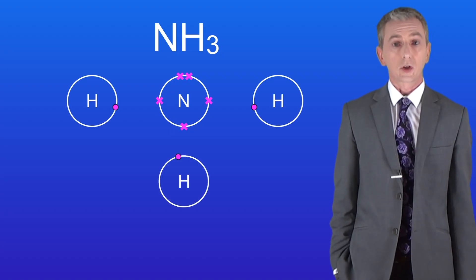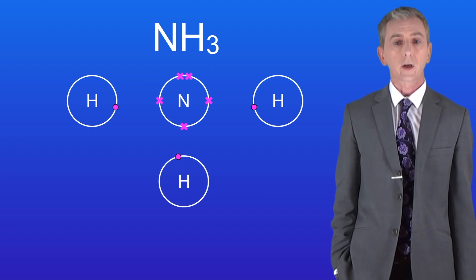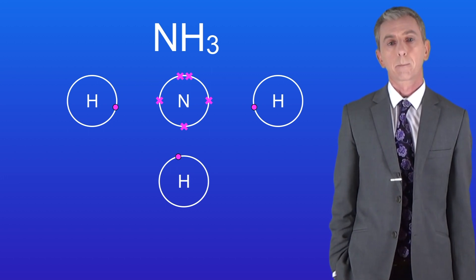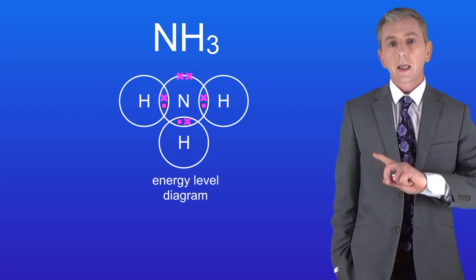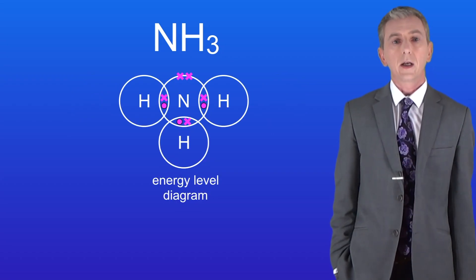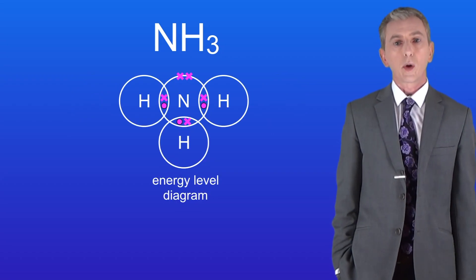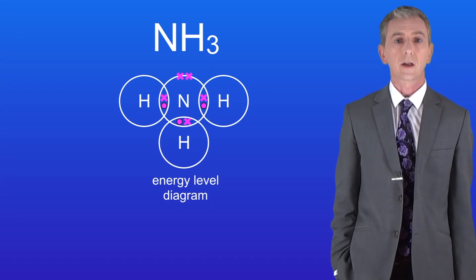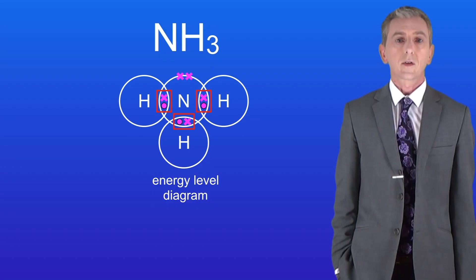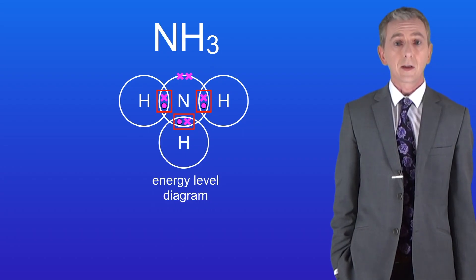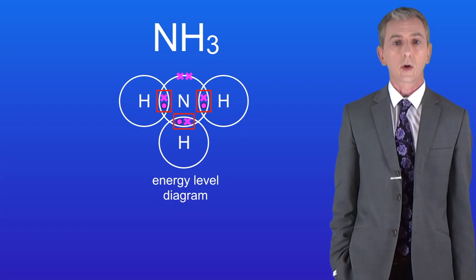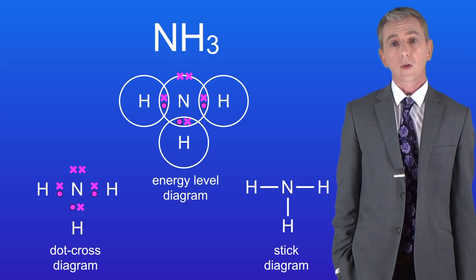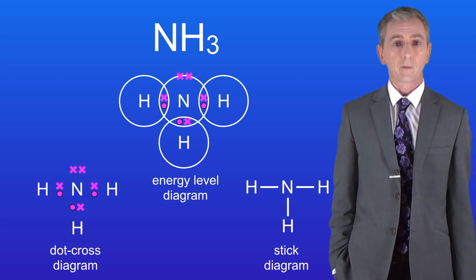I'd like you to pause the video now and try and draw the covalent bonding in the ammonia molecule. Here's the energy level diagram for ammonia, and you can see that both the nitrogen atom and the hydrogen atoms have achieved full outer energy levels. We can see that there are three single covalent bonds in a molecule of ammonia. Here are the dot and cross diagram and the stick diagram for ammonia.